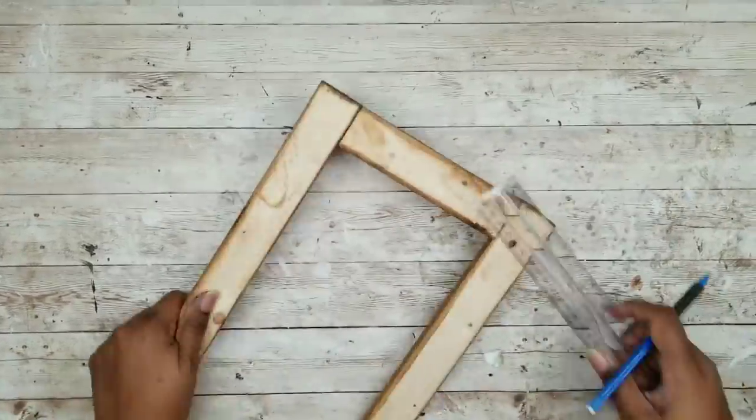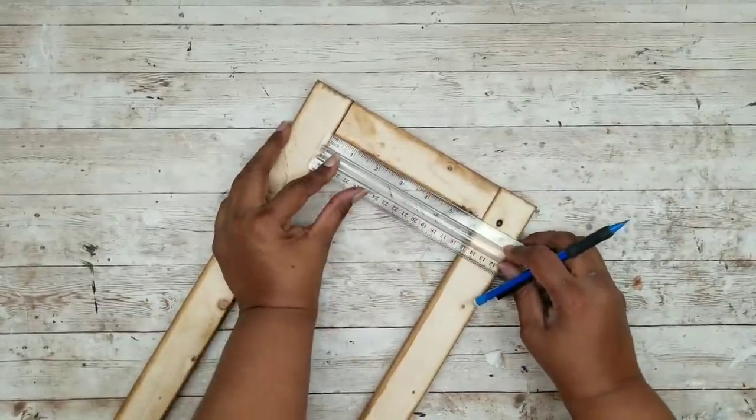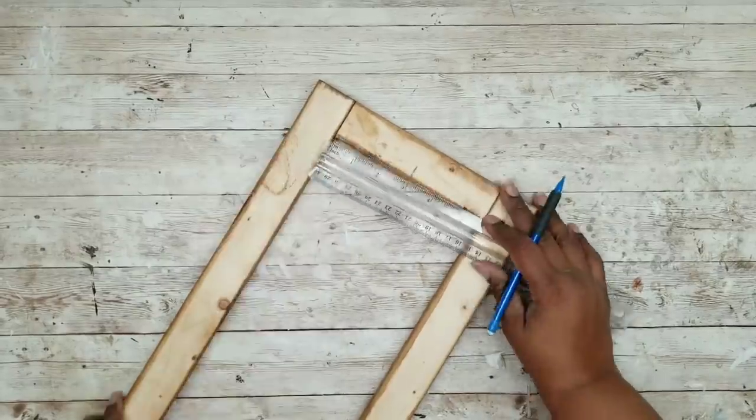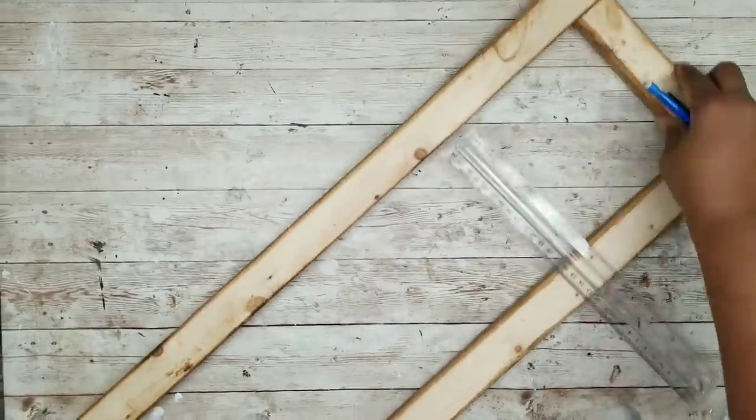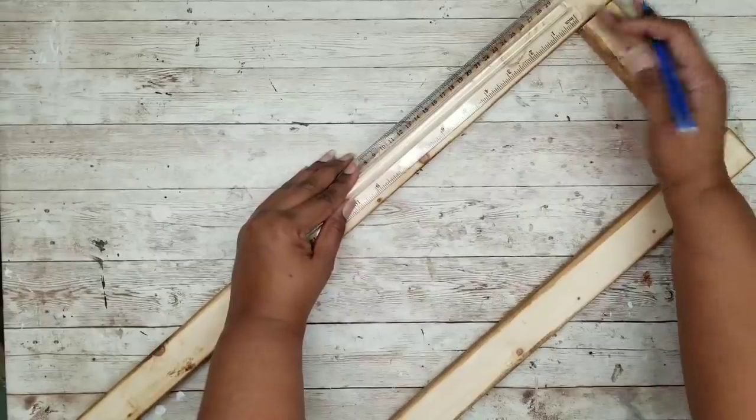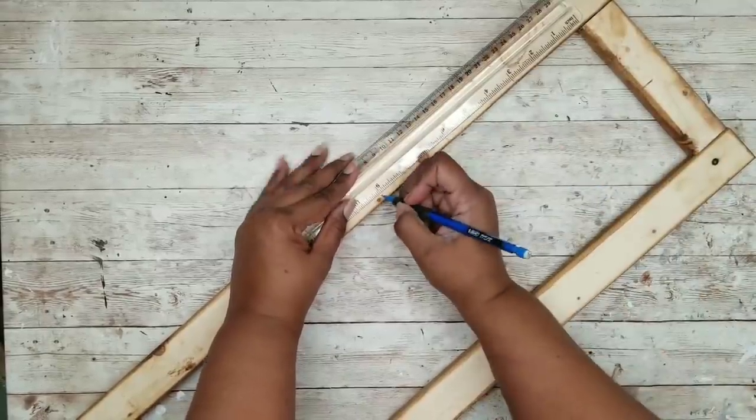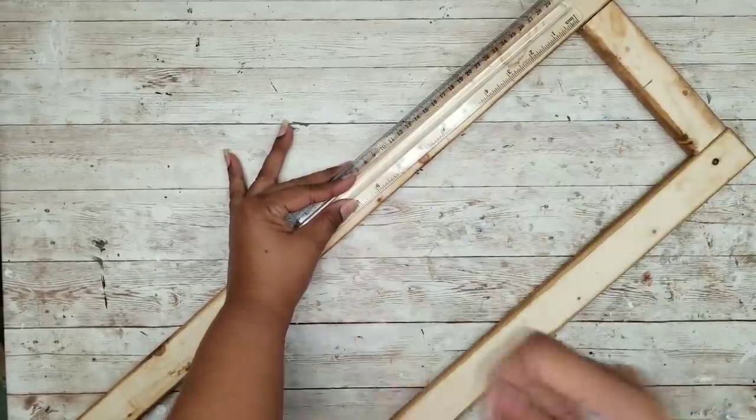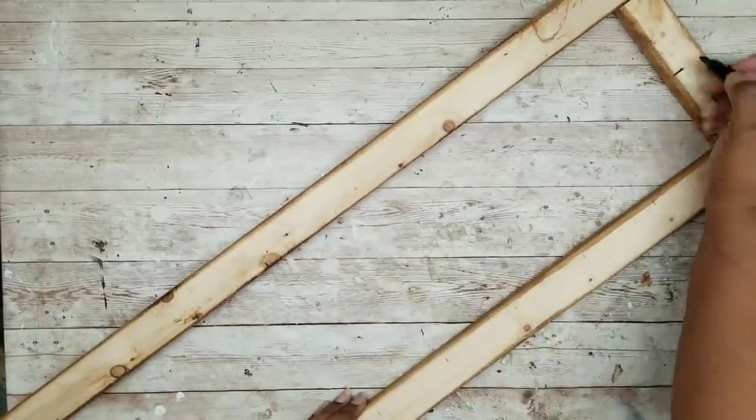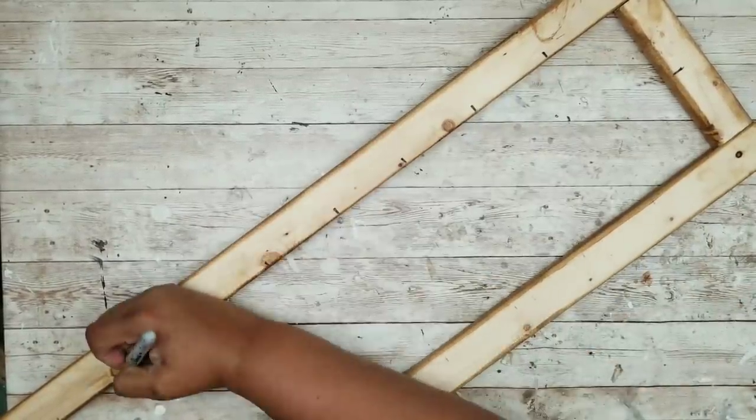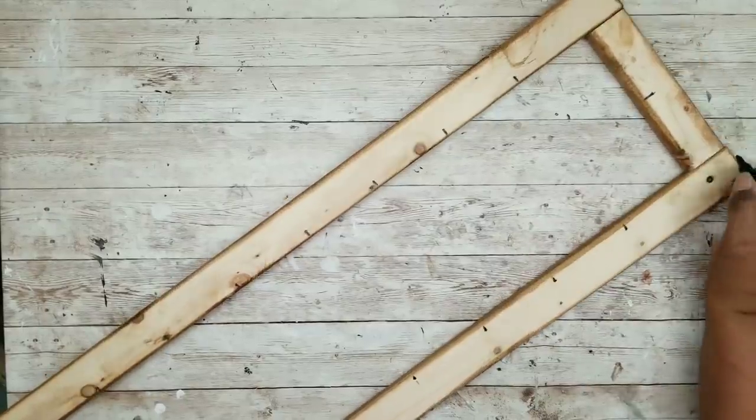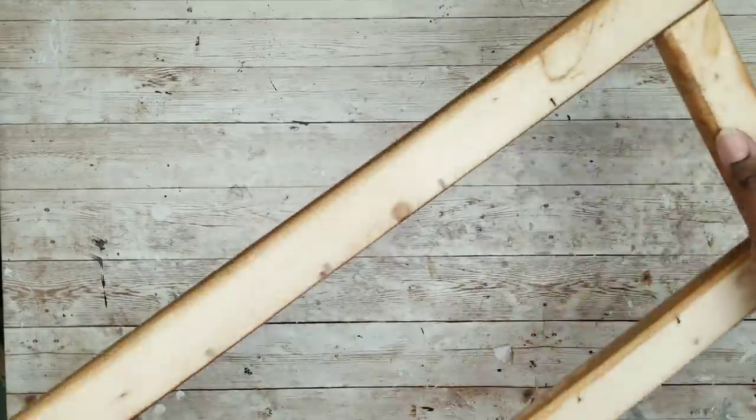Now we're going to flip our frame over to the back side and we're going to mark the center of the top of the frame. Along the sides we are going to be marking three-inch sections all the way down and if your measurements are right and you cut the wood correctly to size, these should be equally three inches apart. I'm just going over my marks with my Sharpie just to make sure I can see them just a little better.